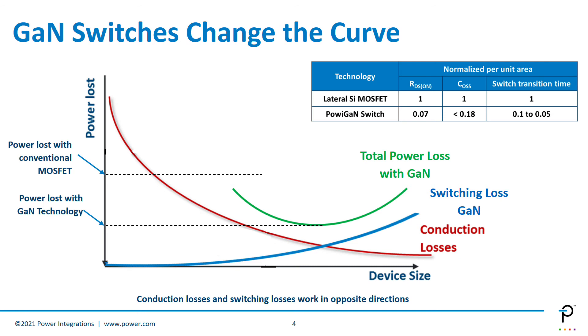These are some statistics on the power GaN switch that we manufacture. As you can see, the specific RDS on is very low, specific CSS is very, very low, and we can also switch faster, which is a wonderful benefit.